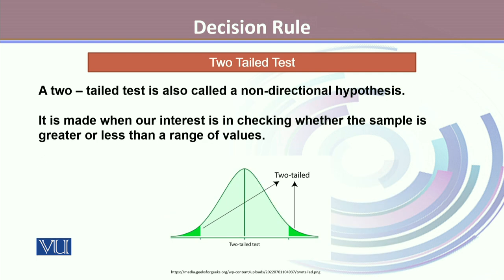A two-tailed test, on the other hand, is also called a non-directional hypothesis. It is used when our interest is in checking whether the sample is greater or less than a range of values. Here, for the same test, we will have both the right tail and the left tail shaded at the same time, and the area under the right tail is the same as the area under the left tail. This can only happen if the distribution is symmetric; if it's not, they could be different.